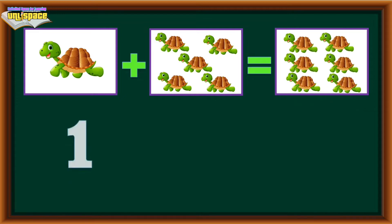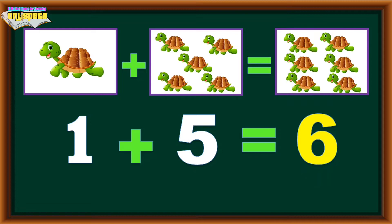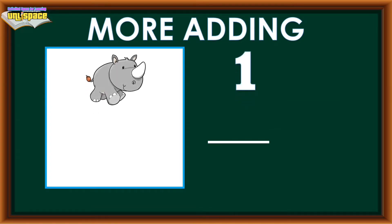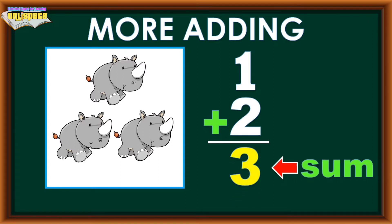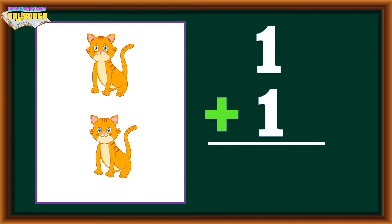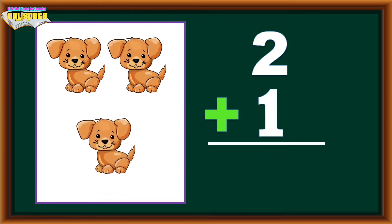1 plus 5 equals 6. Let's do more adding. 1 rhino plus 2 rhinos equals 3 rhinos. The answer, which is 3, is called the sum. 1 cat plus 1 cat equals 2 cats. 2 puppies plus 1 puppy equals 3 puppies.